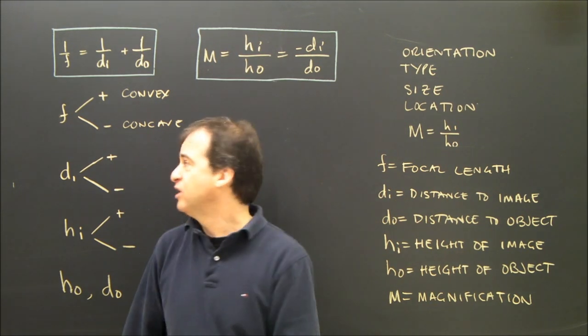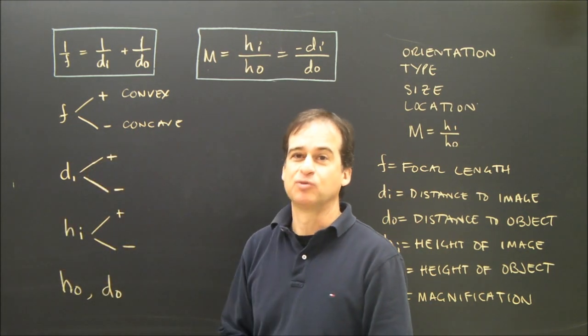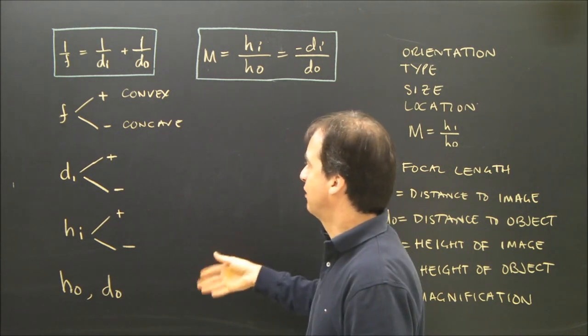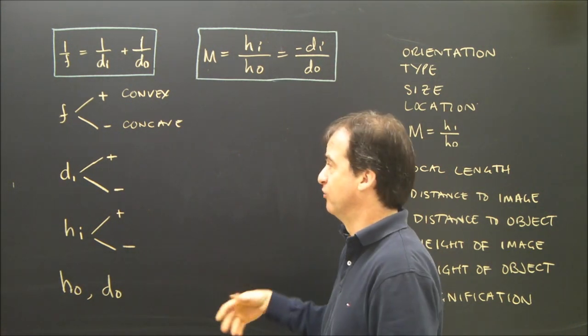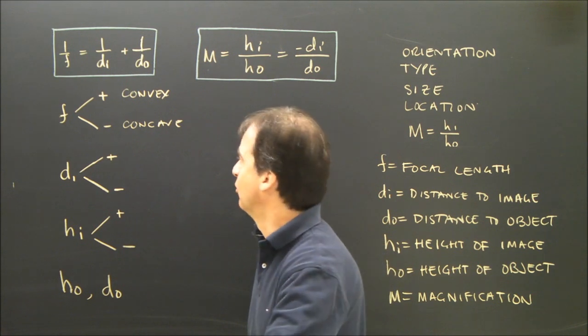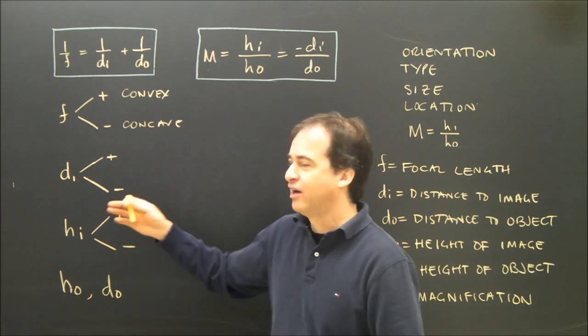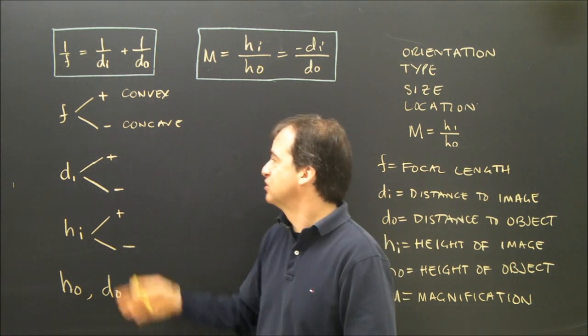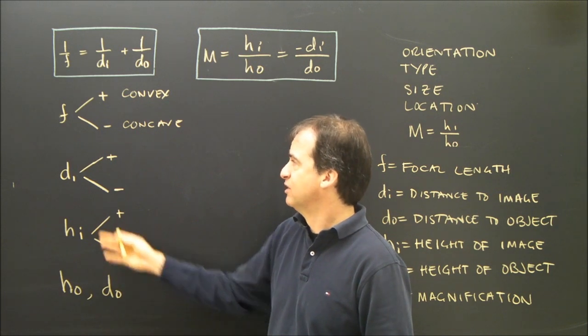We need a sign convention to establish what kind of lens we're using and what some of the image characteristics are, if it's real or virtual. I like to think that there's a very logical way in which these came about. For instance, the focal length.